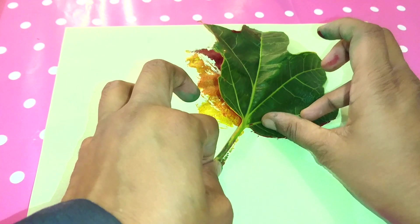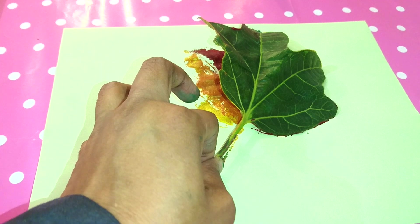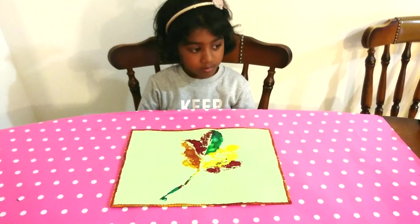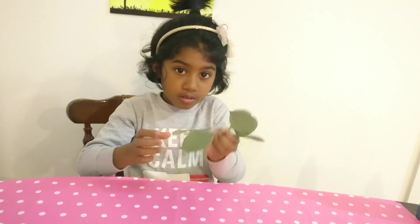Once the leaf is removed, if it looks a little incomplete, add more paint onto the leaf and repeat. There you go, it is ready. I gave it a border with the same colors to make it look better.